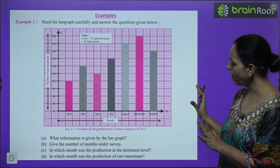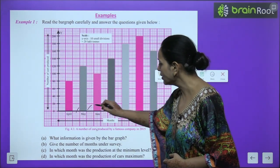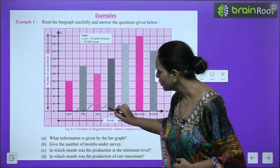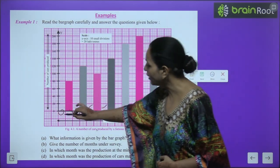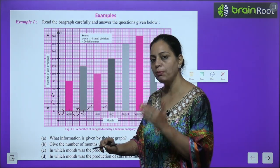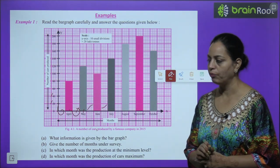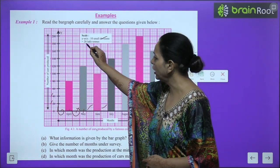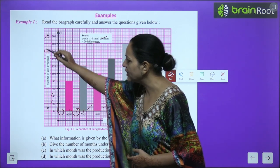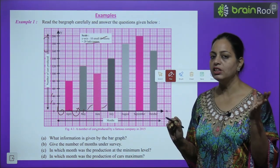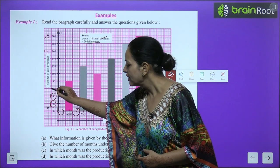Looking at an example bar graph: these are different bars — notice their width is the same, the spacing between them is also the same. On the y-axis, numbers are taken at equal intervals — for example, 20, 40, 60 (multiples of 20). If you start with 20 then jump to 30, that would be wrong; you must use equal gaps. The scale here is: 10 small divisions equals 20 lakh tons. So the y-axis shows 20, 40, 60 lakh tons.